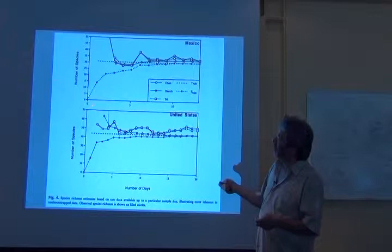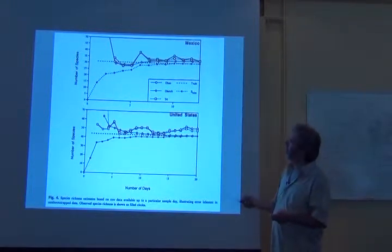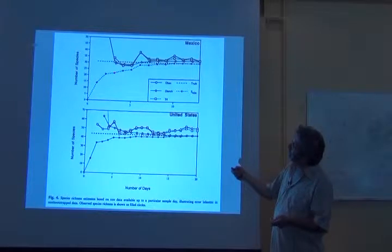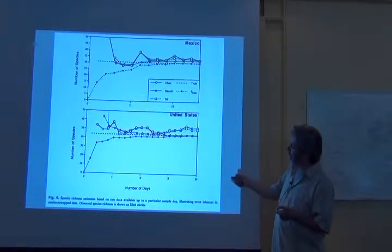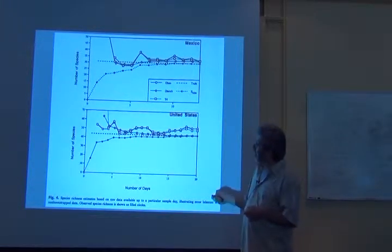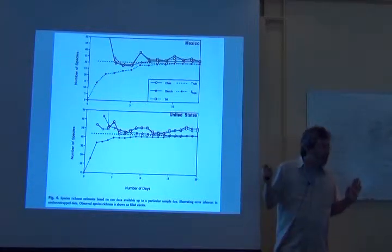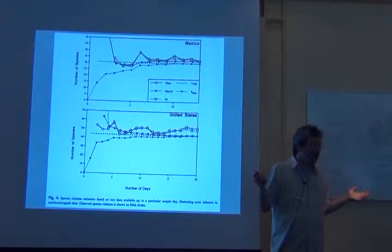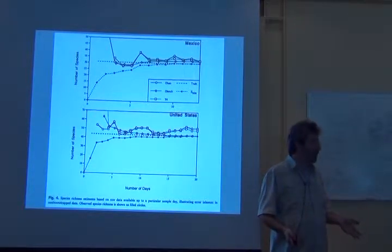The observed number of species with zero effort starts at zero, and goes up and up and up. In Mexico, it gets to 31 species and stops — can't detect any more. And in Lawrence, it gets to 50 species and stops. So out here I could sample for another thousand days and I can't add anything to the fauna. Of course, we never know where that point is in real life.